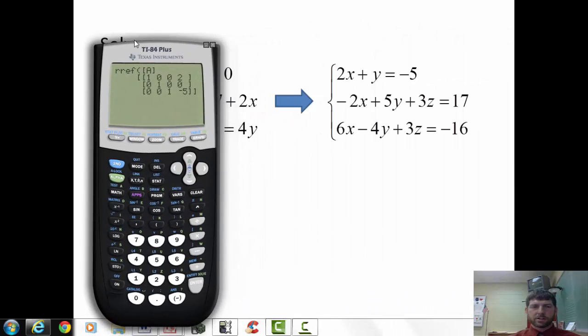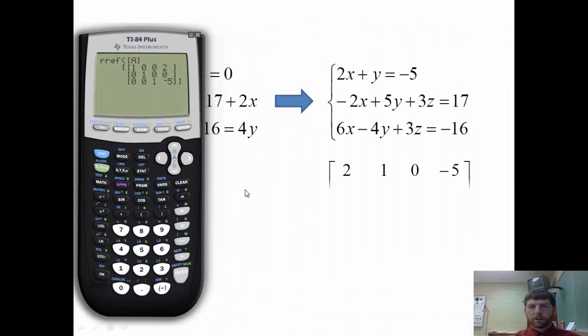Now we're ready to key it in to the matrix. Now, my x's are 2, negative 2, 6. My y's are 1, 5, negative 4. My z's, notice this first equation didn't have a z. But I have to have something in the z column. So I'm going to put a 0 there. So it's 0, 3, 3. And then my constants. Remember, constants mean the stuff without variables. Are negative 5, 17, and negative 16.